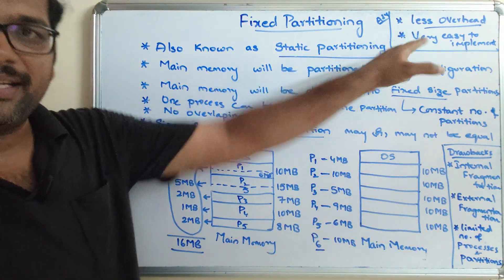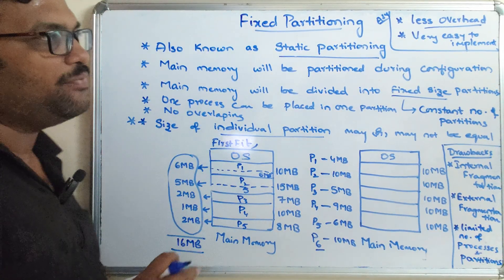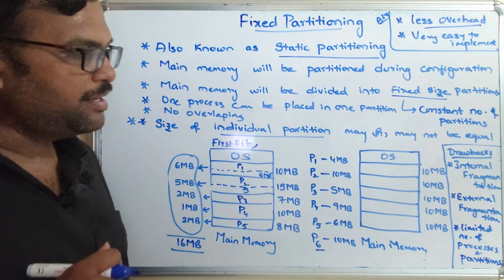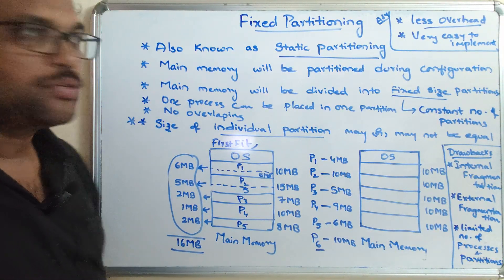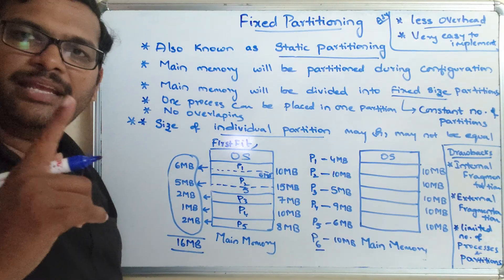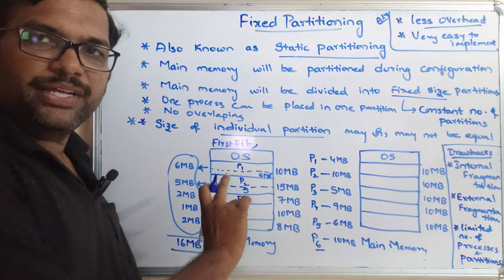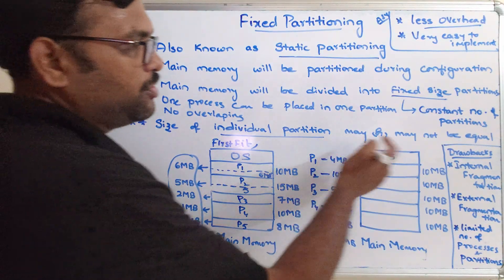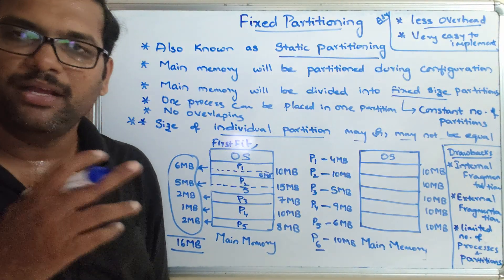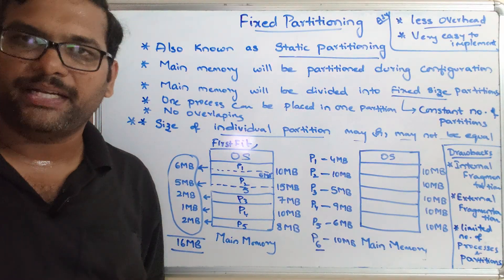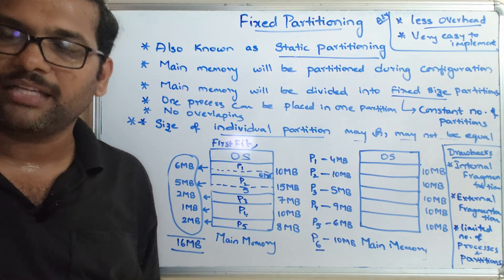So, these are the drawbacks and these are the advantages. Advantages: less overhead on the operating system because everything is done during configuration, minimum resources required, and very easy to implement. Drawbacks: internal fragmentation, external fragmentation - memory will be wasted - and limited number of processes as well as partitions. This is all about the first technique in contiguous memory allocation, that is fixed partitioning. Fixed size partitioning means the number of partitions will be fixed, but the size of each partition may or may not be fixed. Thank you very much.